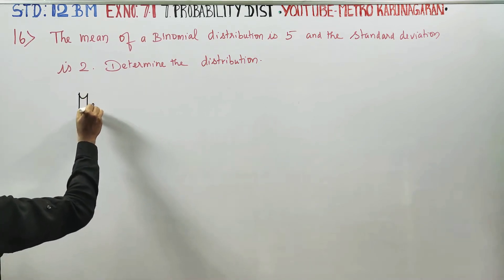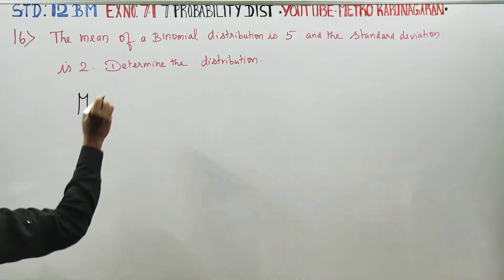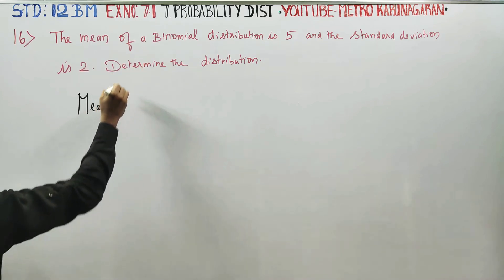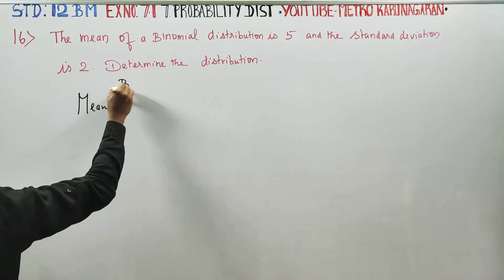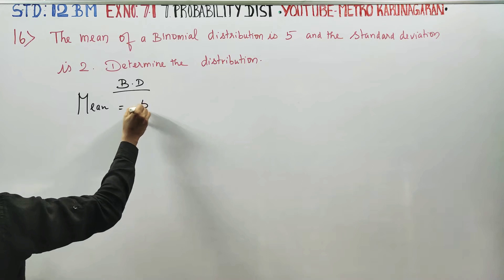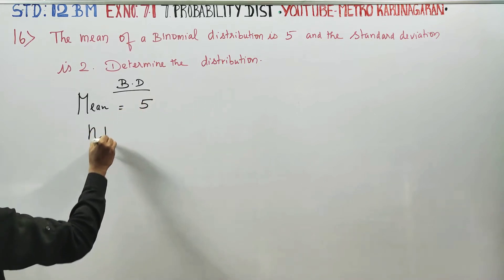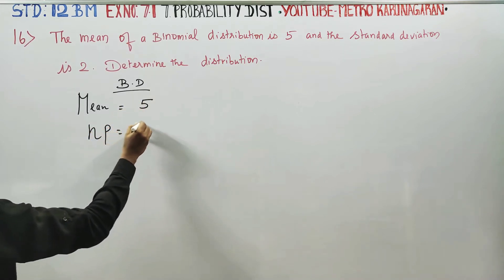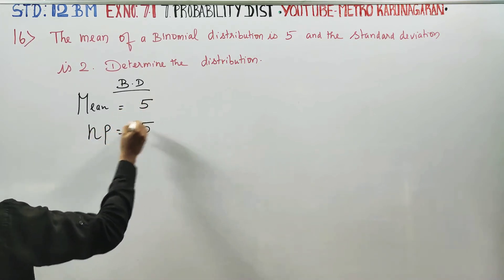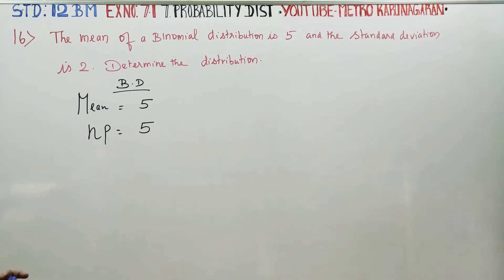Mean is equal to 5. Mean is equal to n into p, that is np equals 5.